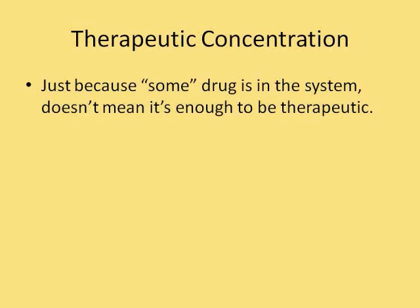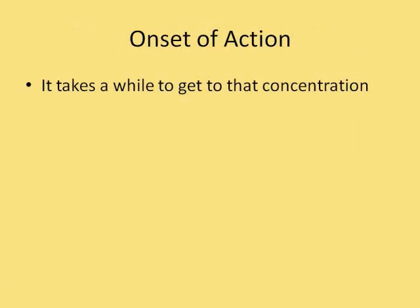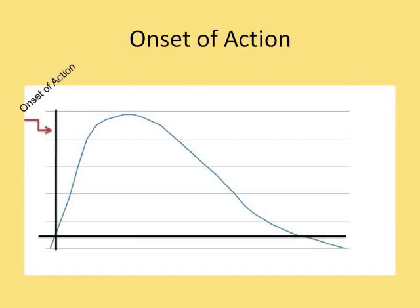Just because some of the drug is in the system doesn't mean that it's enough to be therapeutic. The concentration of the drug in the blood needs to reach a certain level before you're going to see a therapeutic response. From the time the client takes the drug until we start getting a therapeutic response, that's called the onset of action — when the drug finally reaches that therapeutic level.